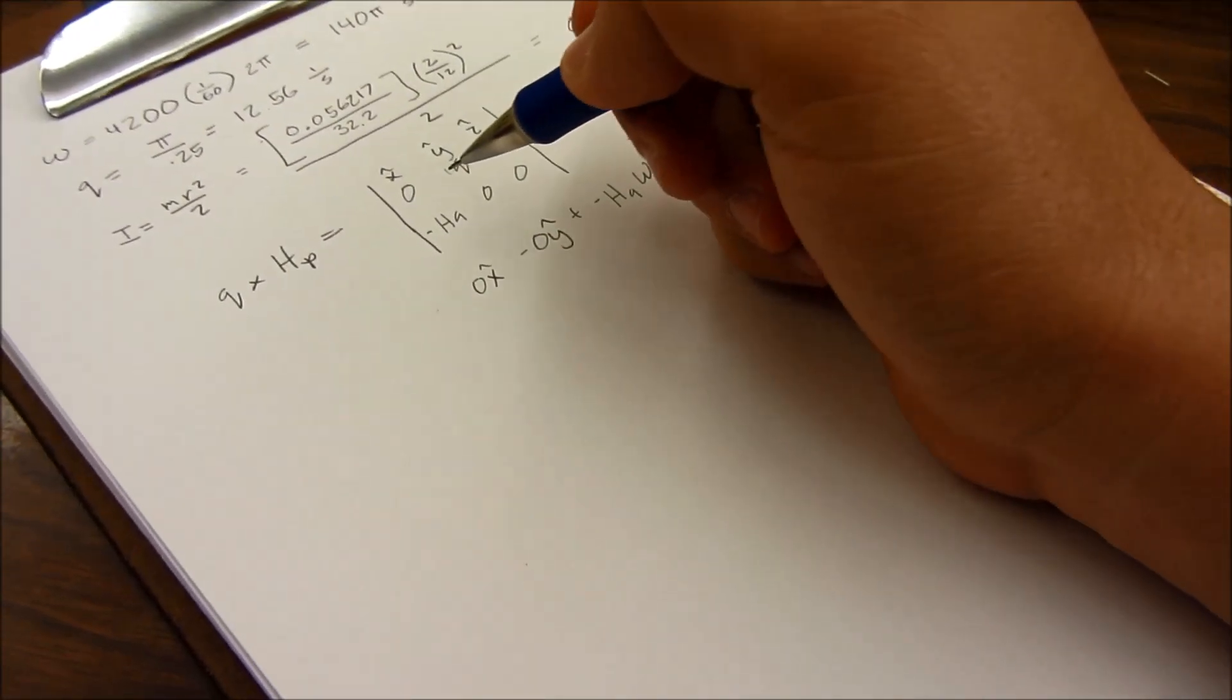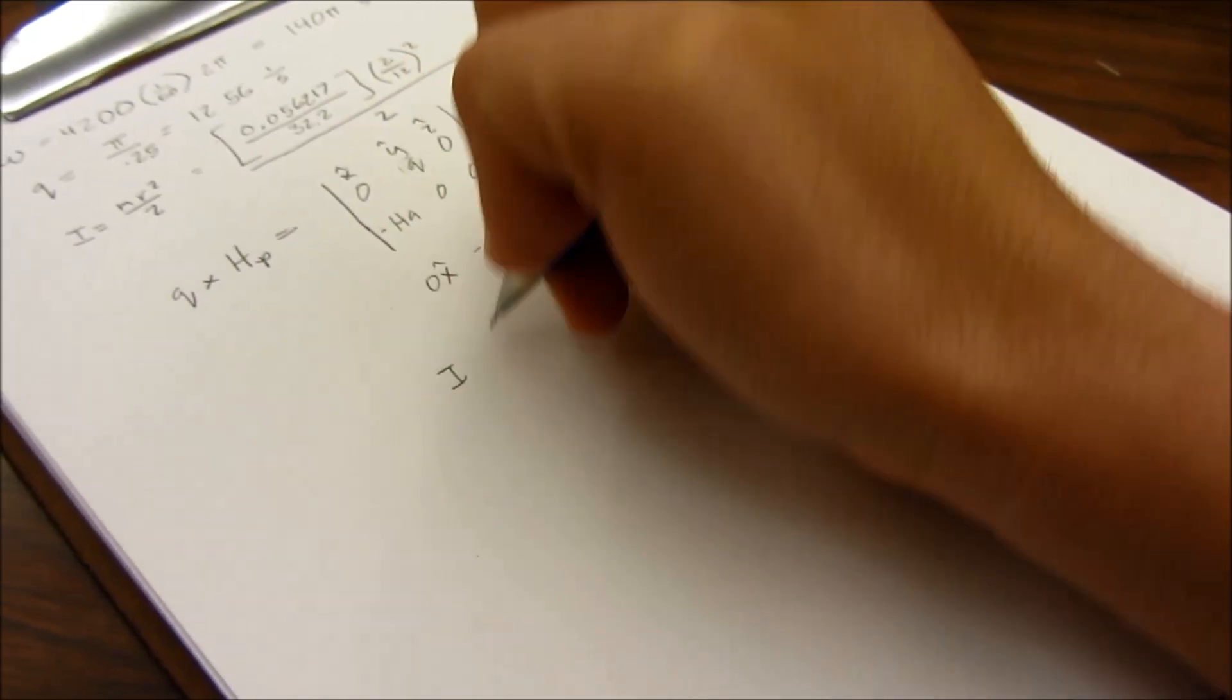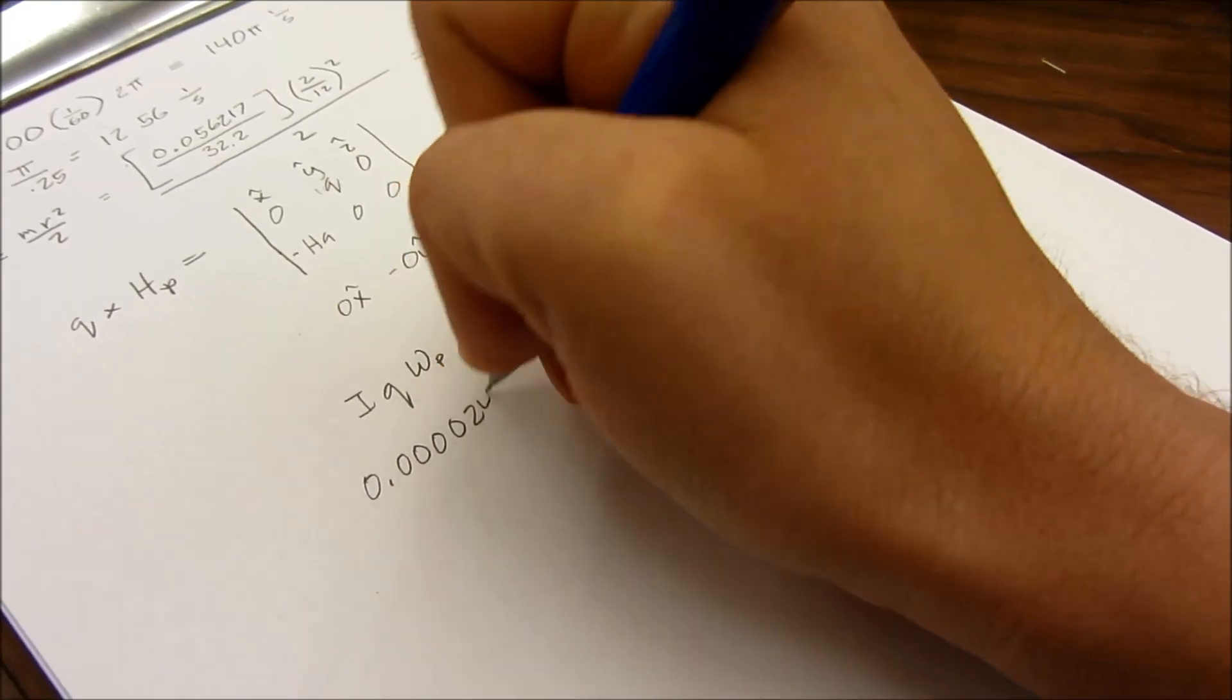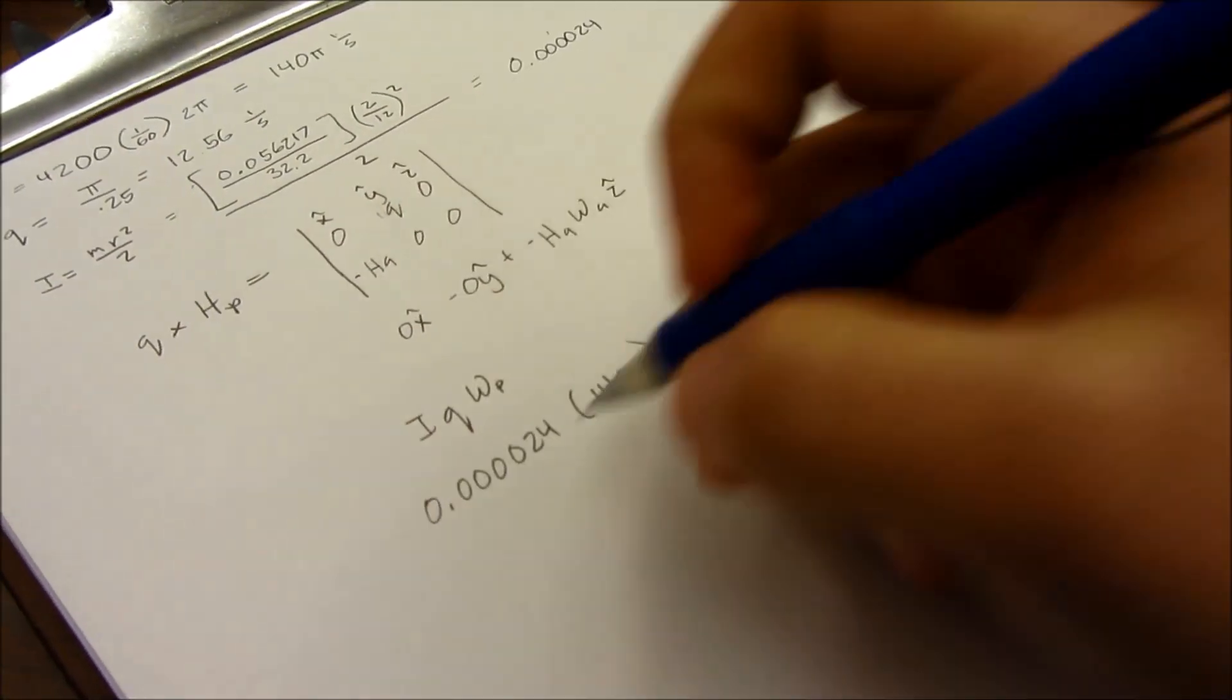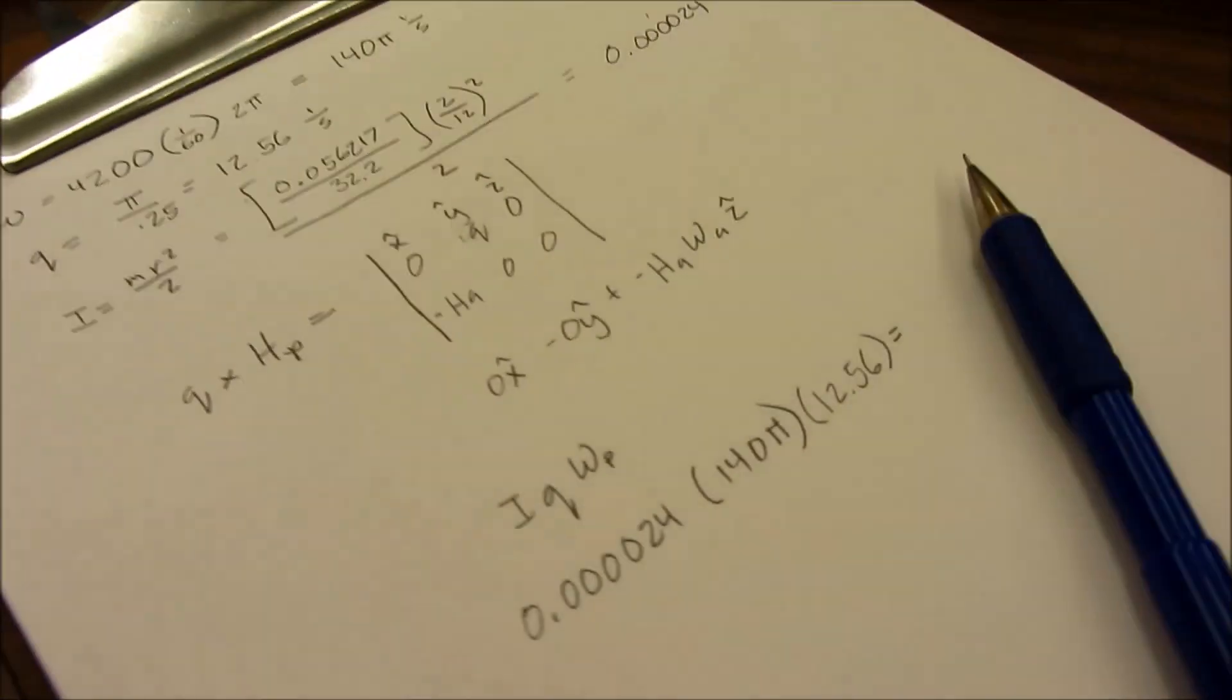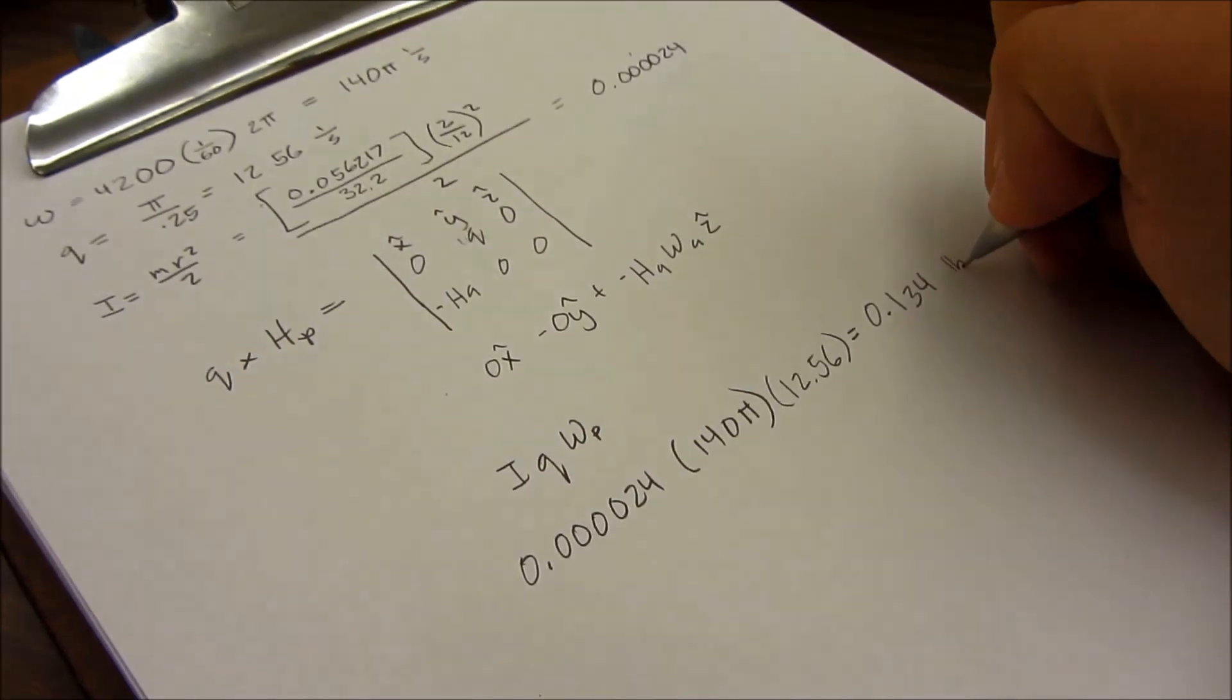So we have a negative pitch rate when I actually did the test. So the negatives will cancel out. And we get that the torque is equal to I, Q, Omega prop. So our moment of inertia is 0.000024. Our Omega for the prop is 140 pi. And our Q is 12.56. So when you multiply all these together, you get a value of 0.134, roughly, pound-feet, or foot-pounds. So that's our calculated answer.